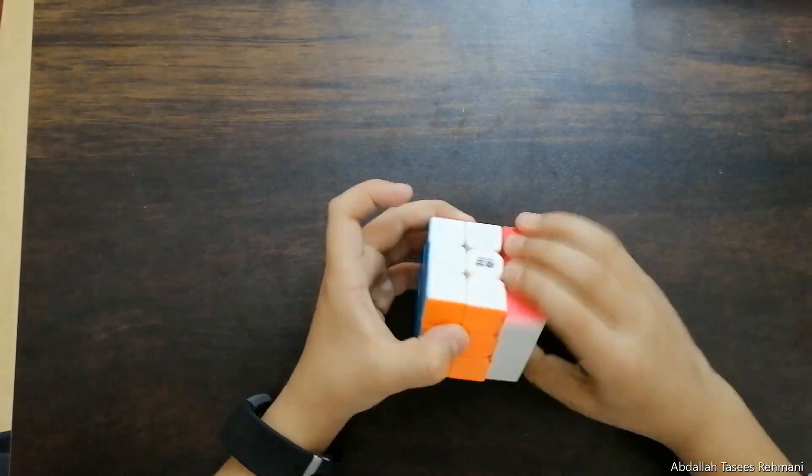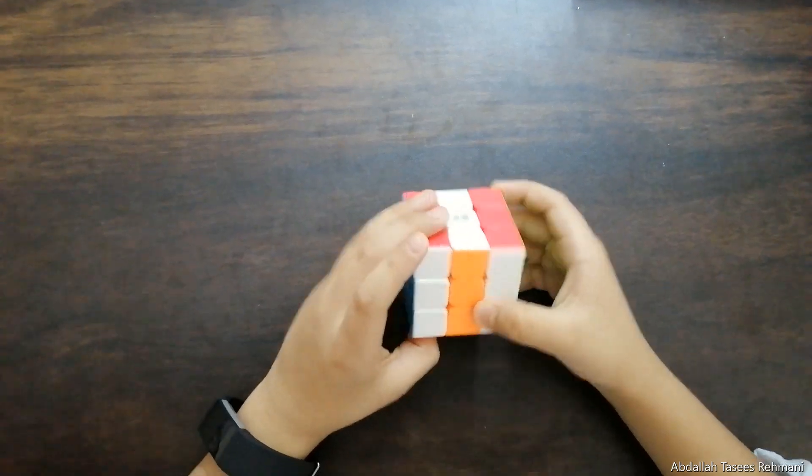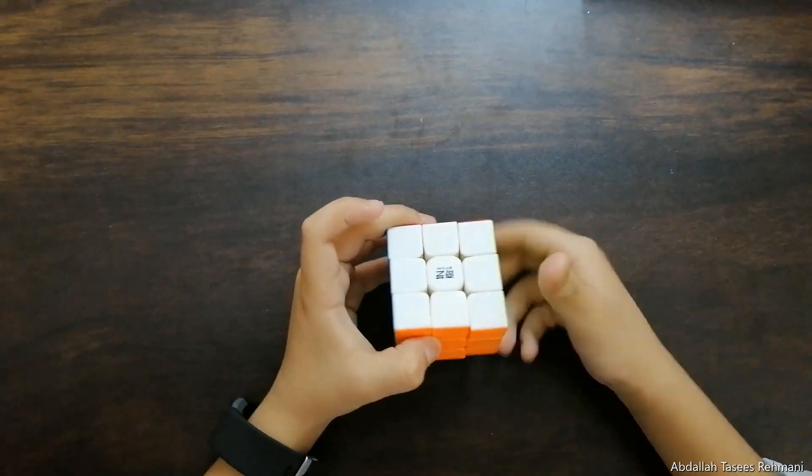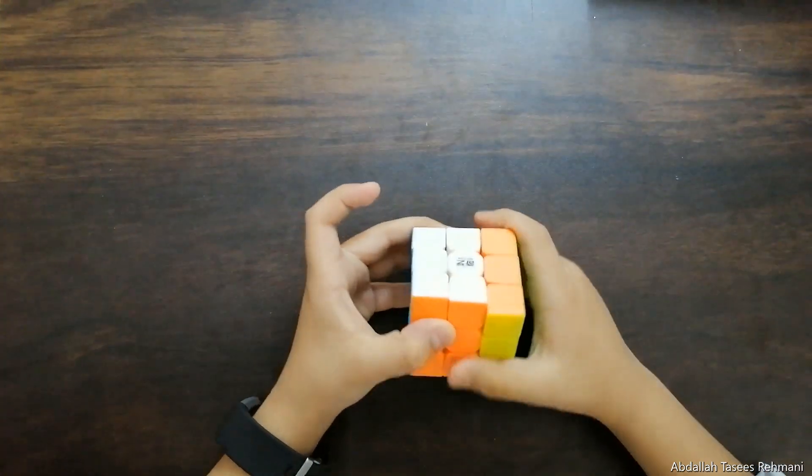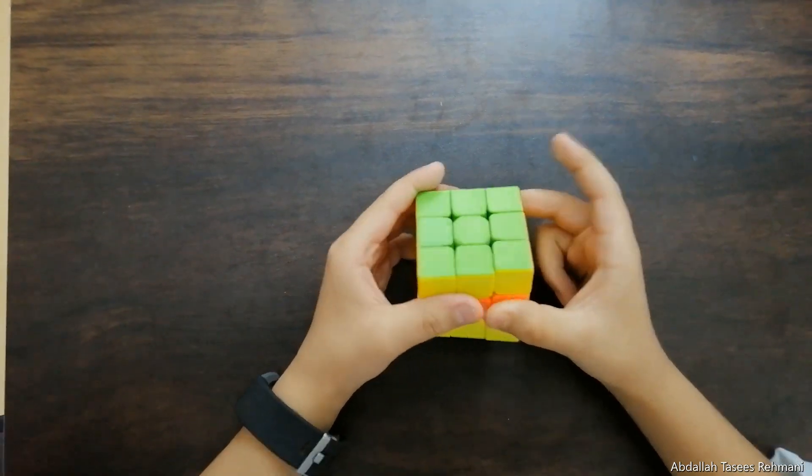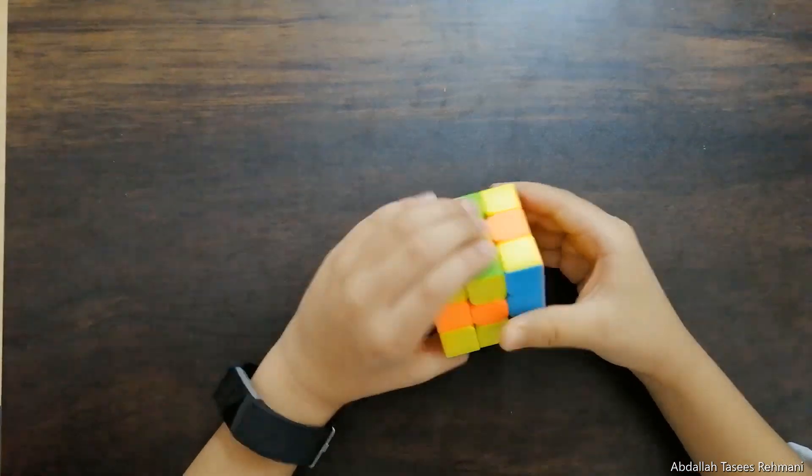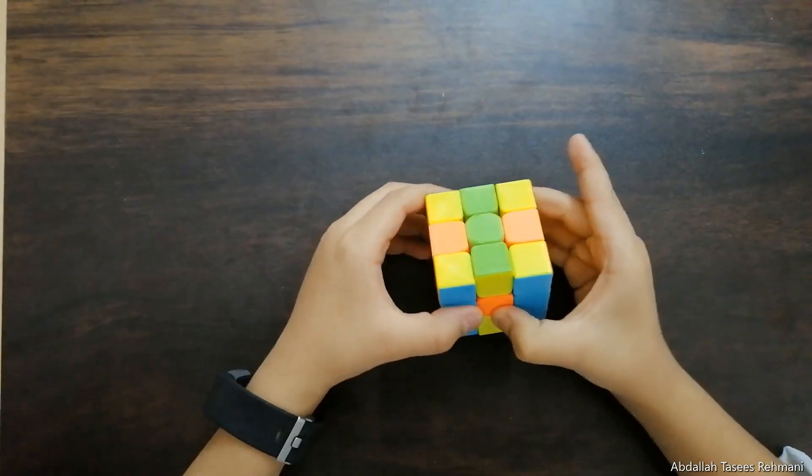If we have white, we should have white on this side too. Now we first do like this. Now turn the cube like this, and we do like this. The same. R L dash.